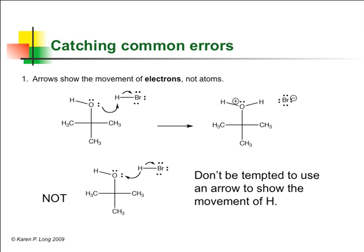You just know you will have mechanism problems on exams, probably every exam. How do you keep from making silly mistakes? Remind yourself of these three things. One, start the arrow at the electron pair being moved. Arrows show the movement of electrons, not atoms. The highlighted arrow shows a very typical wrong answer, there is no electron pair on an H atom. You do not want to use an arrow to show the H moving over to the O. The arrows are used for electron movement only.